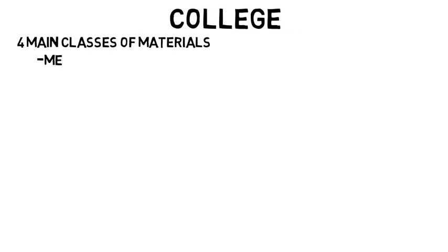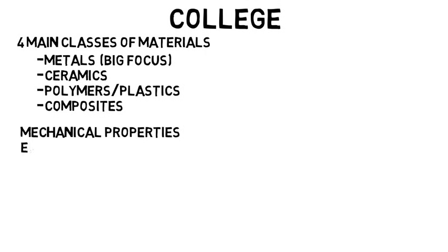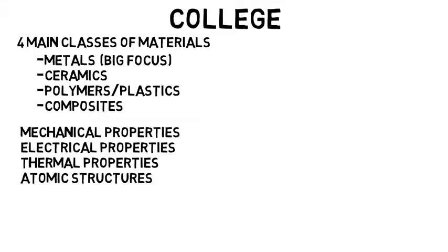Now let's see what you can expect in college. You're going to cover the four main classes of materials: metals, ceramics, polymers or plastics, and composites. Although you learn a lot about everything, there's a big focus on metals. The big things you'll study are mechanical properties, electrical properties, thermal properties, as well as atomic structures.